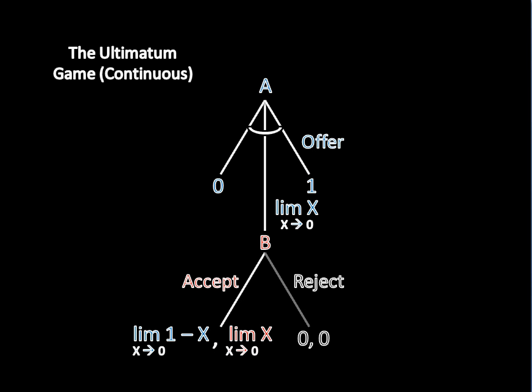Now, if you recall back to last video, that means the player making the offer is allowed to offer the other the limit as that offer approaches zero, which is, of course, zero. That might be a little bit linguistically confusing, so I'll repeat it. The player making the offer is allowed to offer the other player the limit as that offer approaches zero, which is zero.